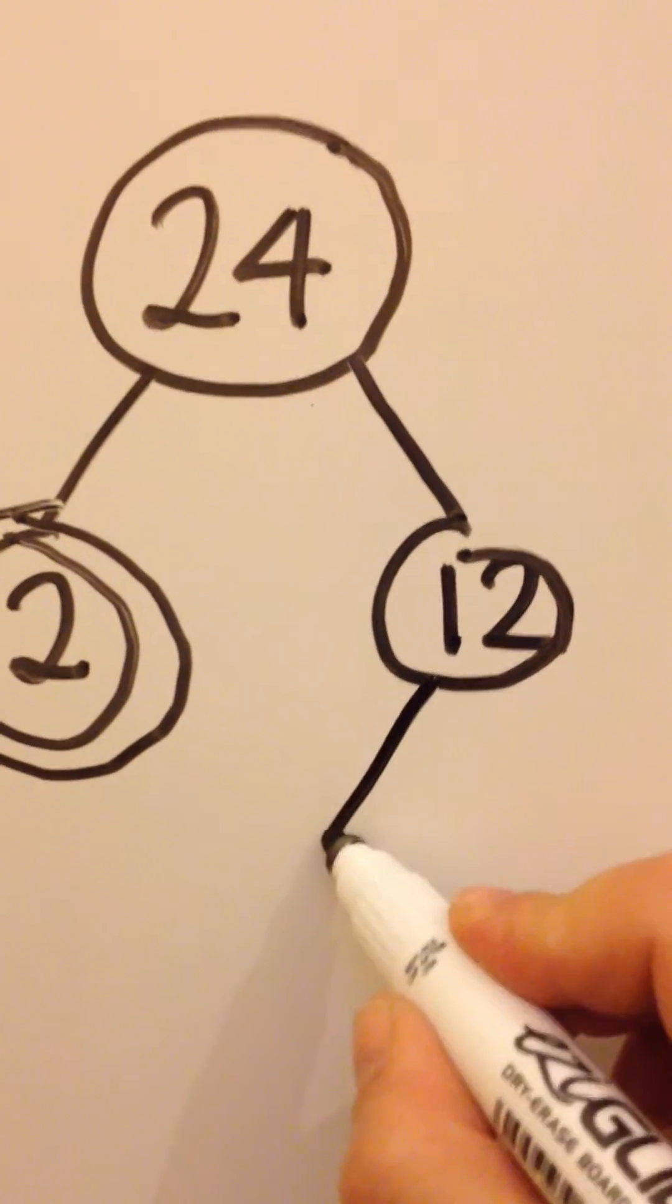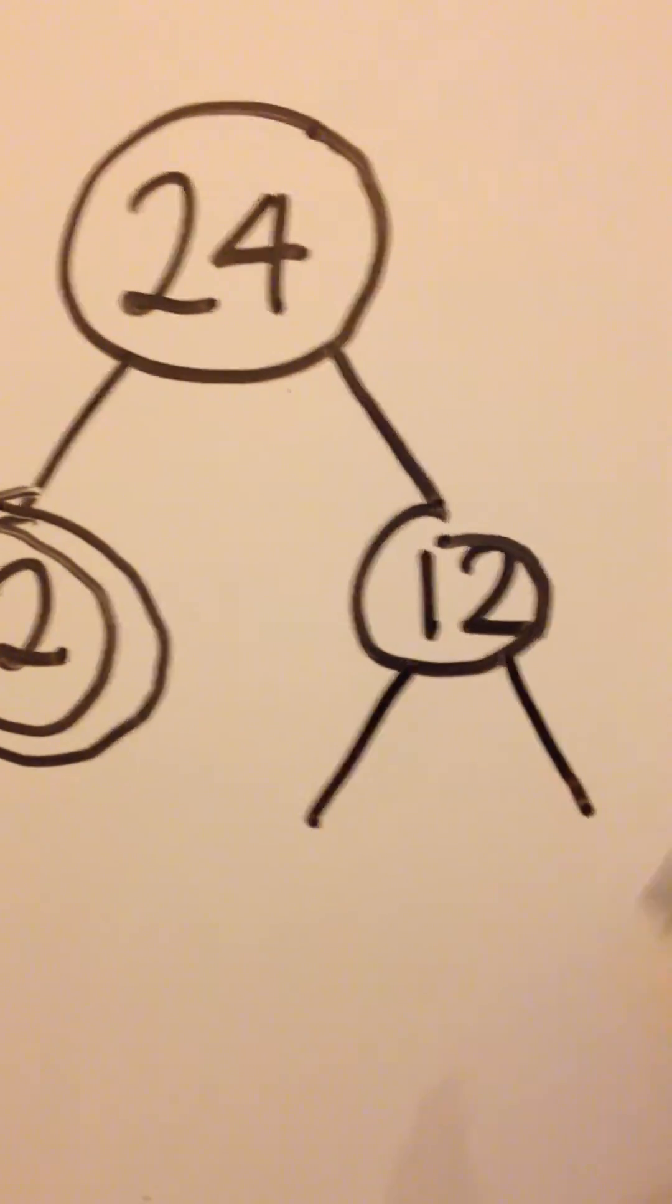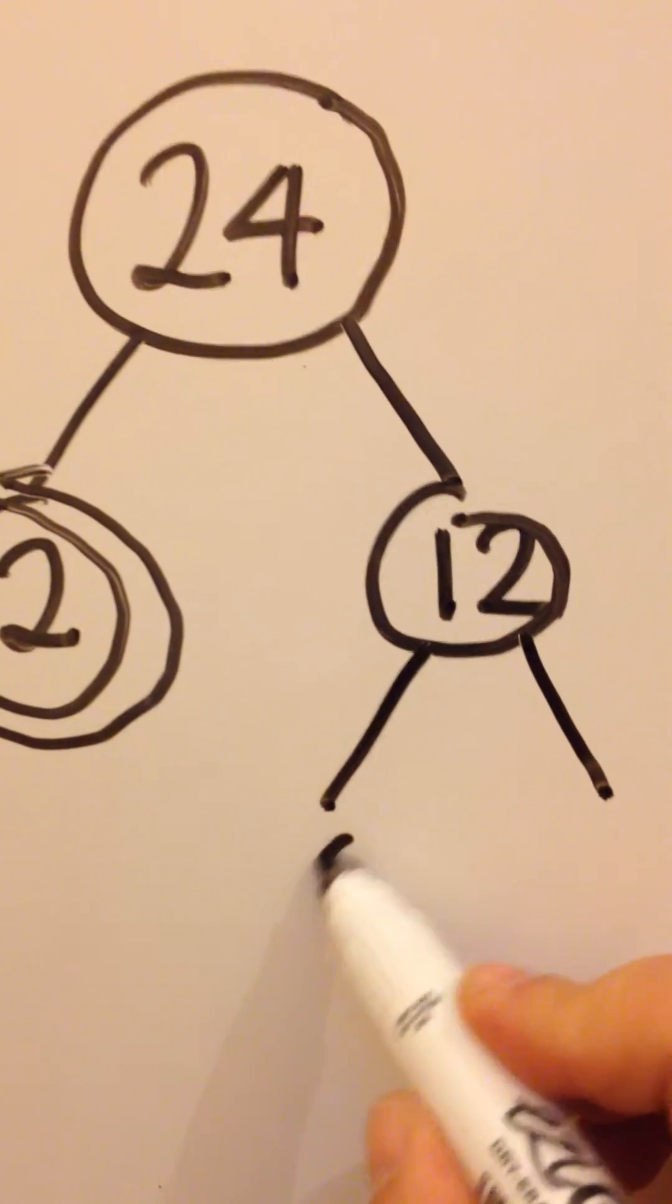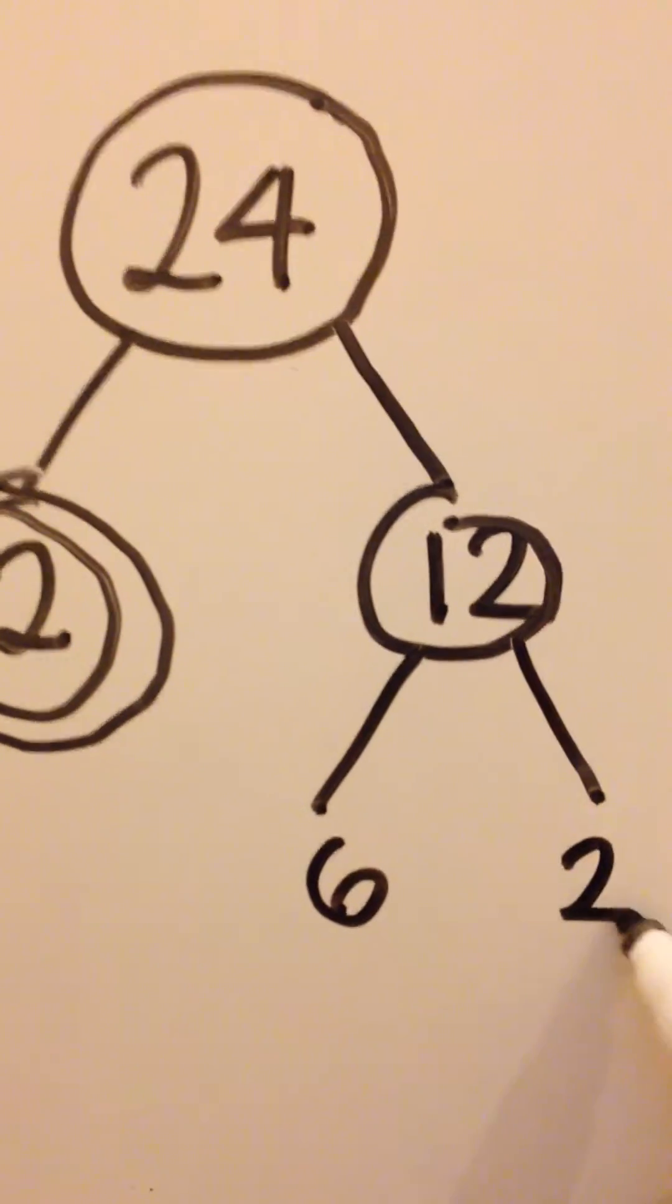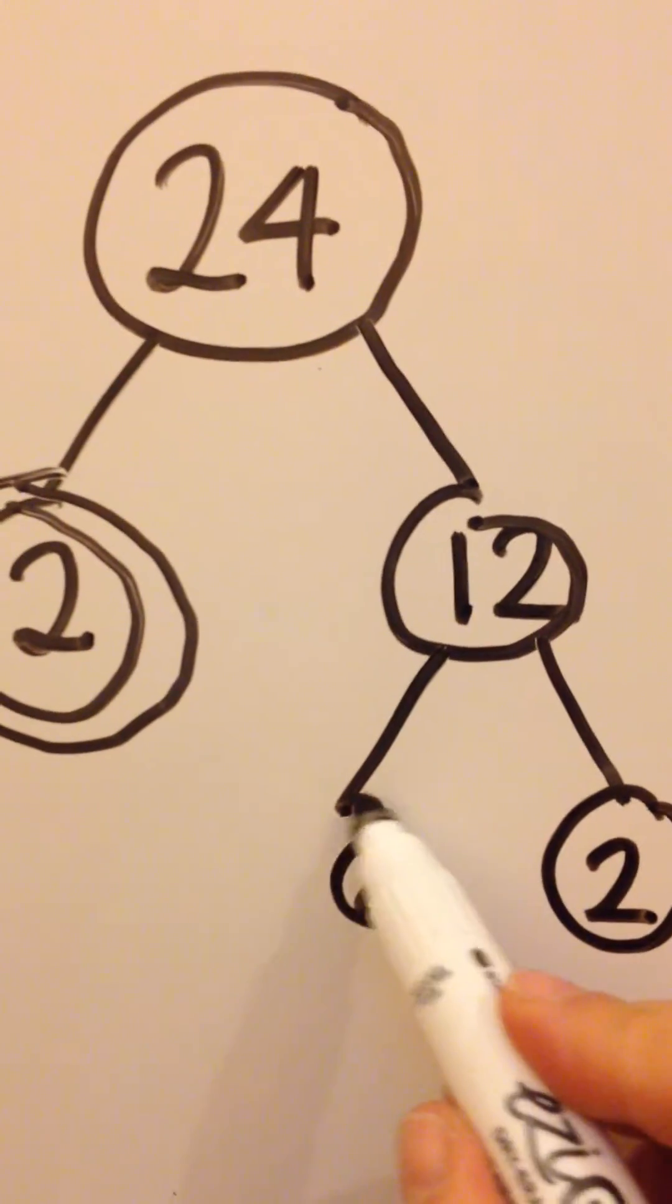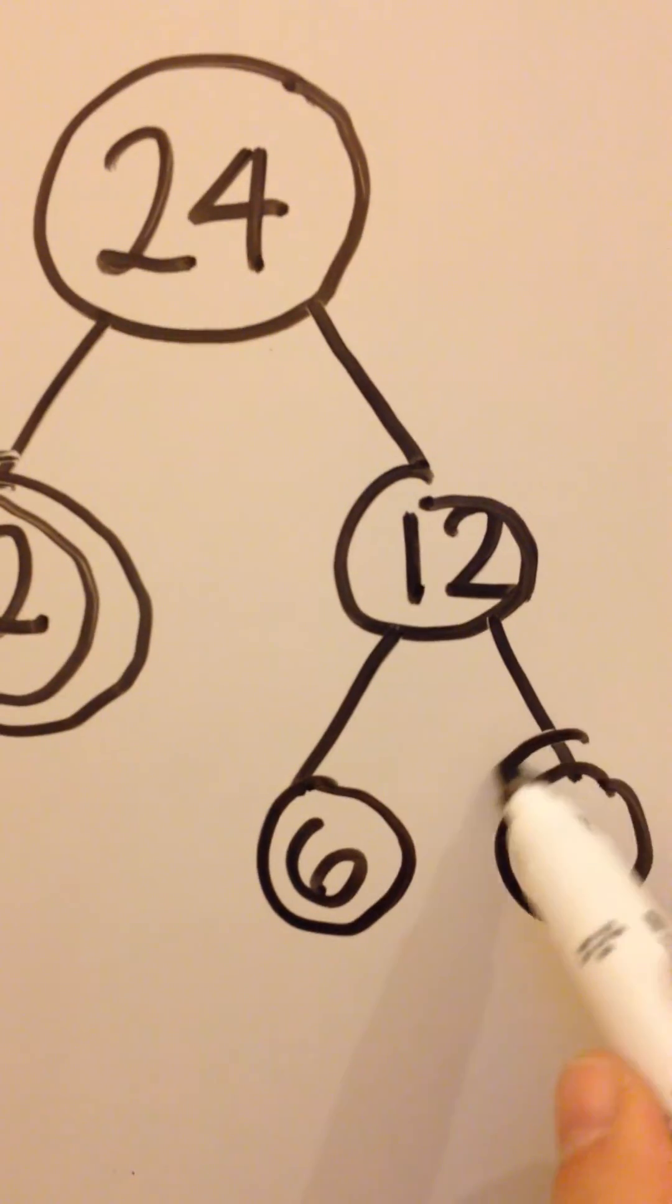Now let's work on the 12. How could we make 12 with a times table sum? Let's go for 6 times 2. Again, if you spot a prime number, put a double circle around it.